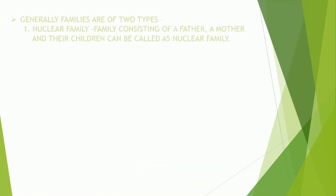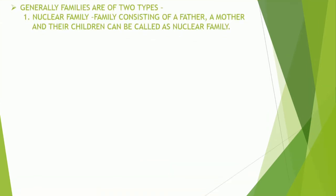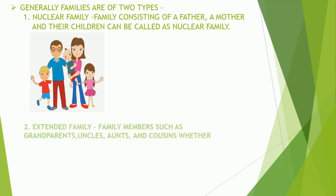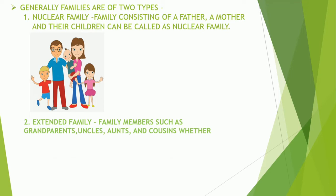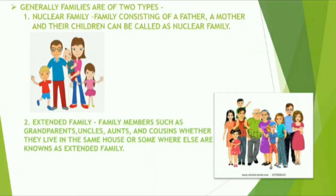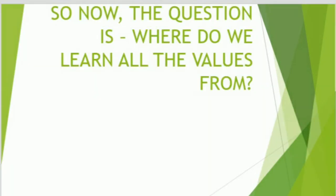Generally, families are of two types. Number one: nuclear family — a family consisting of a father, mother, and their children. Number two: extended family — family members such as grandparents, uncles, aunts, and cousins, whether they live in the same house or somewhere else, are known as an extended family.